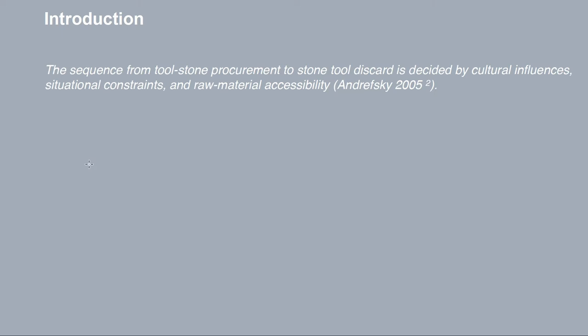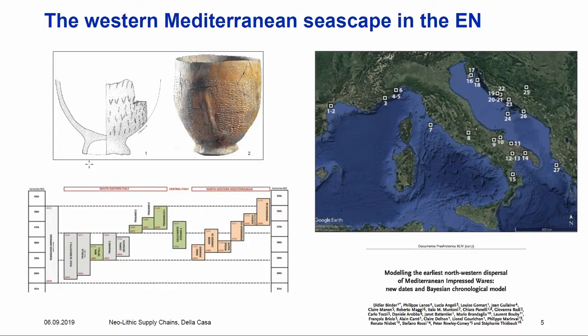Chaîne opératoire and its extension to social and technological systems has been an important discussion in recent years. This is the framework of the early Neolithic — understanding the change in procurement and diffusion strategies from the late Mesolithic to early Neolithic. The Impresso Cardial Complex, within a very brief span of time, maybe 150 years, spreads across the central and western Mediterranean, creating a network within which specific raw materials — flint and obsidian — circulate.